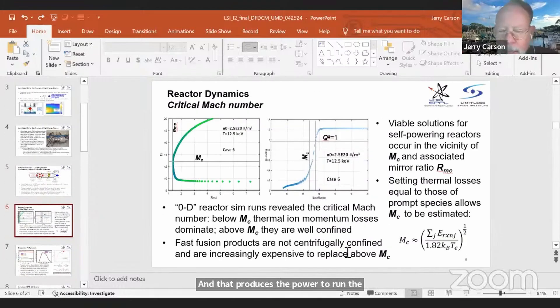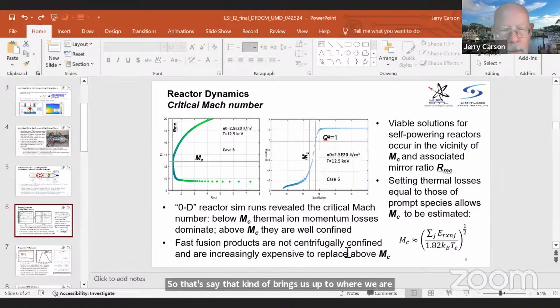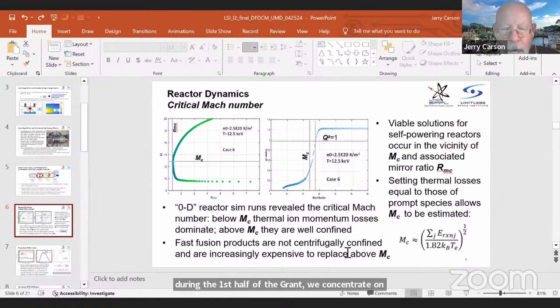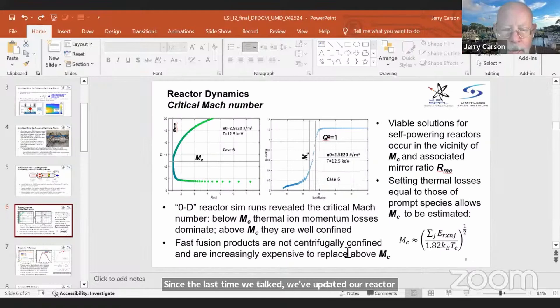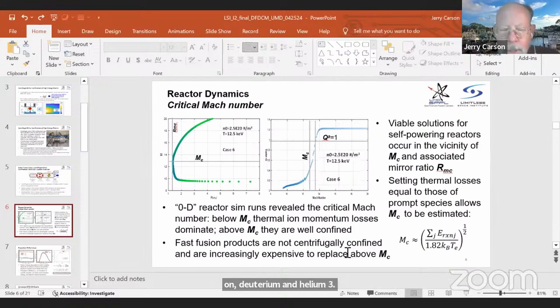So that kind of brings us up to where we are. During the first half of the grant, we concentrated on deuterium-tritium systems. That gave us a lot of insight into the reactor and the warm plasma. Since the last time we talked, we've updated our reactor model to include more reactions, and now we're focusing on deuterium and helium-3. But before I talk about some of those results, the results you see here on this page are from the DT test.